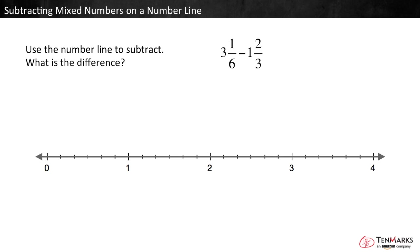3 and 1 sixth is 3 wholes and 1 sixth. So, it goes here. 1 and 2 thirds is 1 hole and 2 thirds. 2 thirds is the same as 4 sixths. So, 1 and 2 thirds goes here.